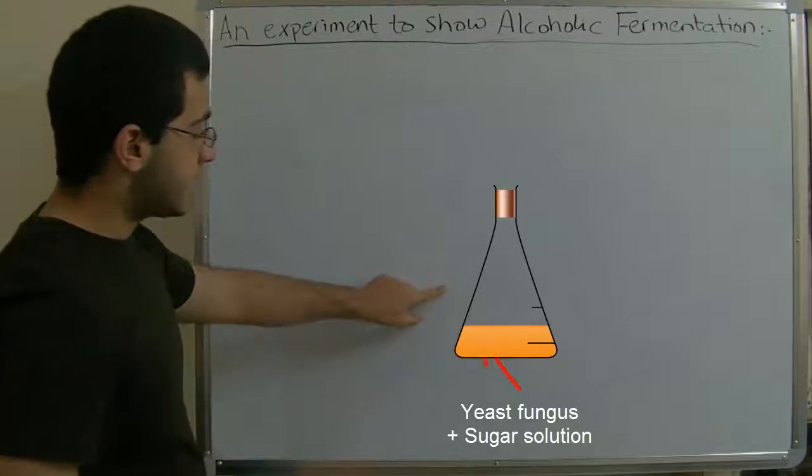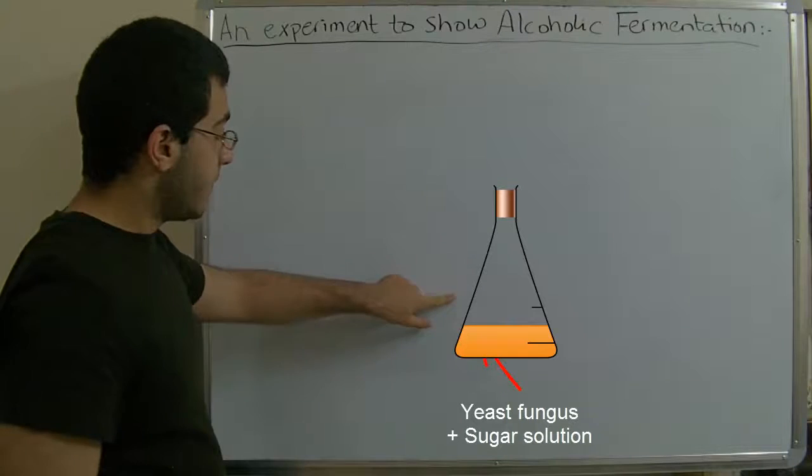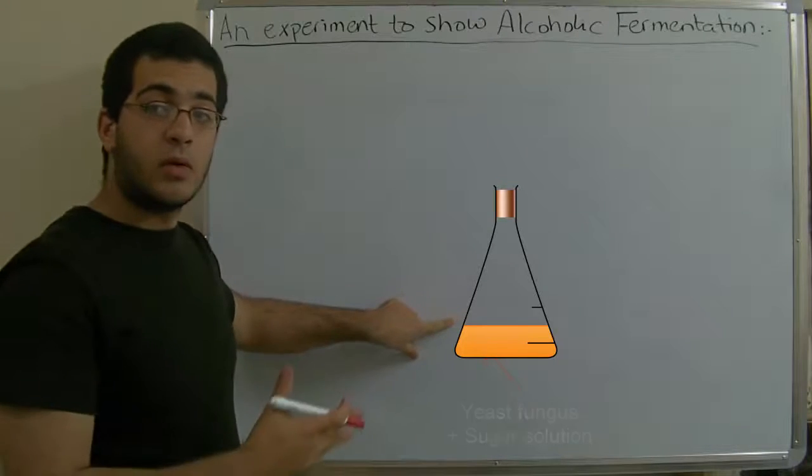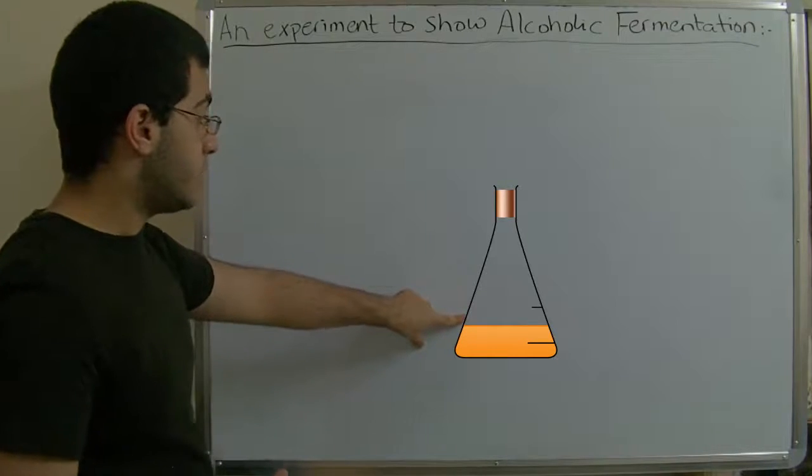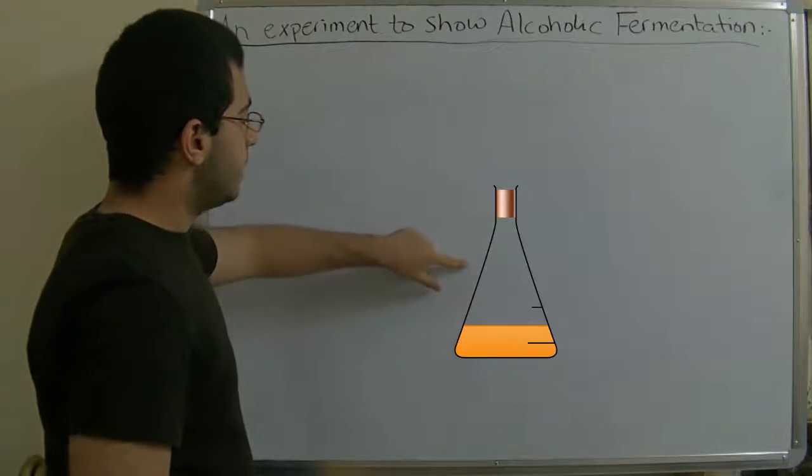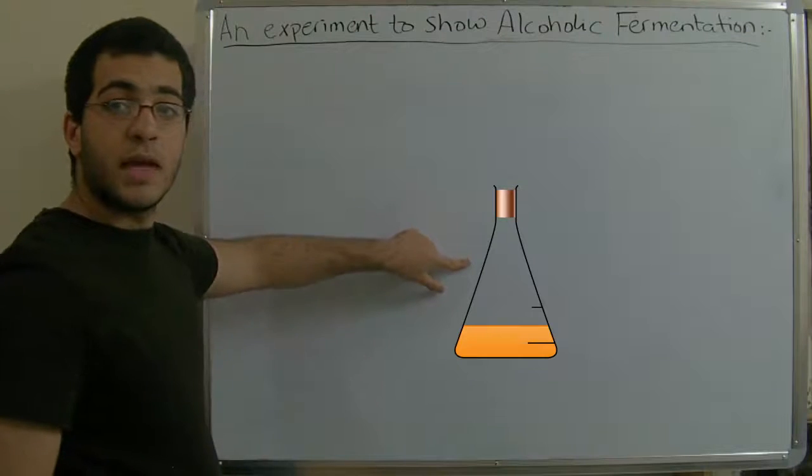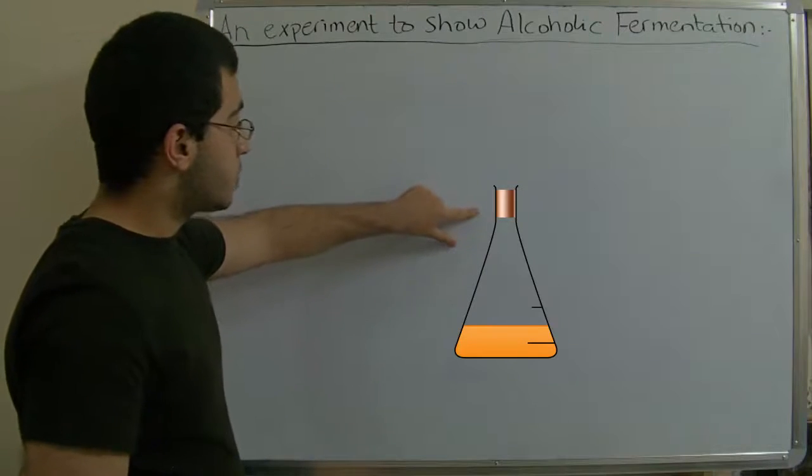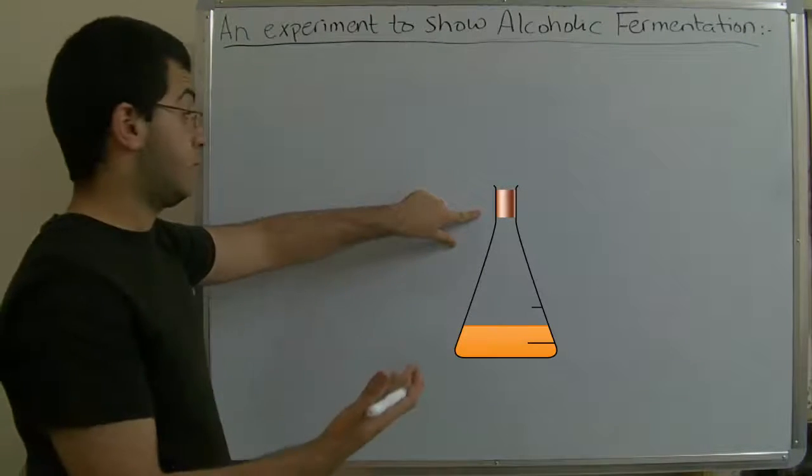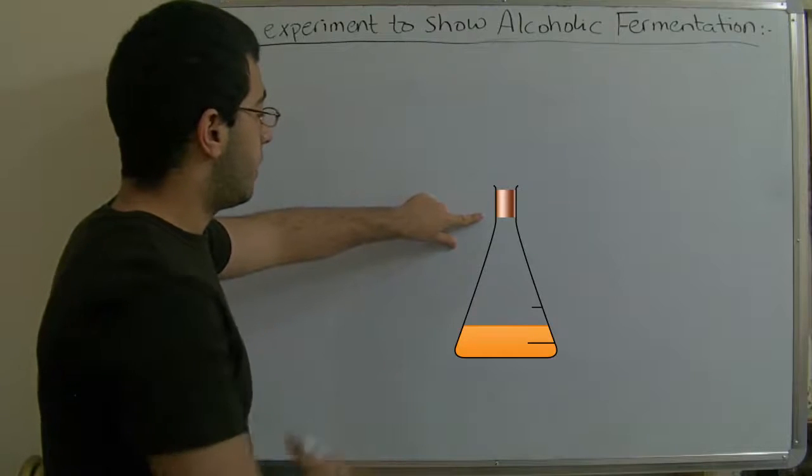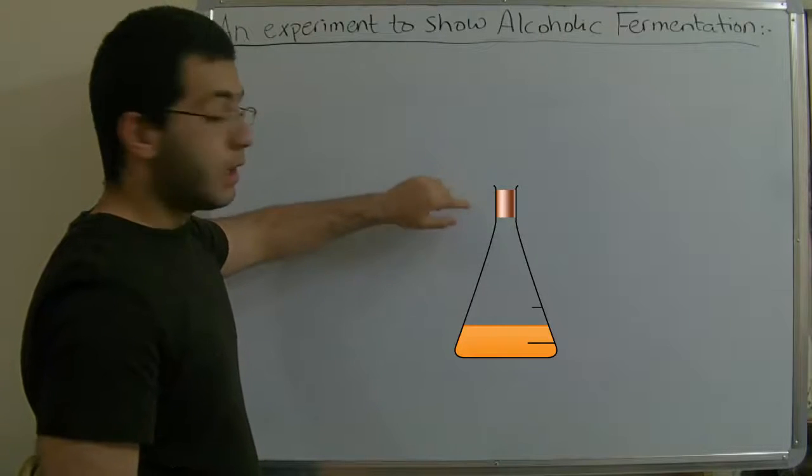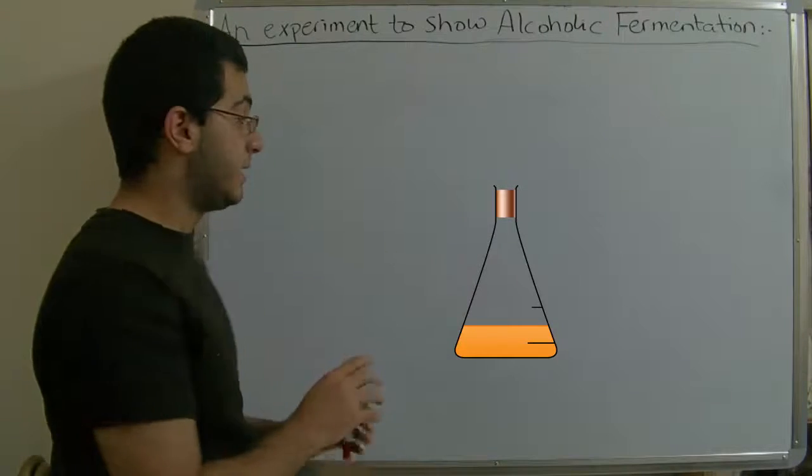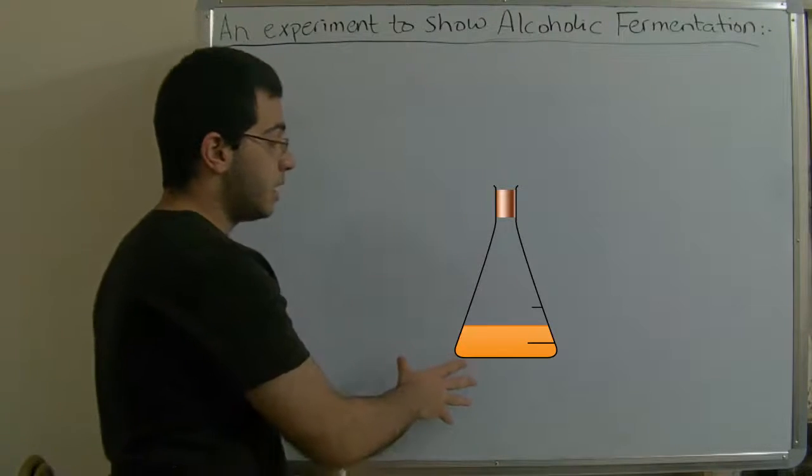This flask, as you can see, contains molasses or any sugary solution with yeast fungus. Along the neck of this flask, we have a stopper here which prevents any liquid or gas that could be produced during this experiment. This stopper has a hole in which a tube will be inserted. This is the first part.